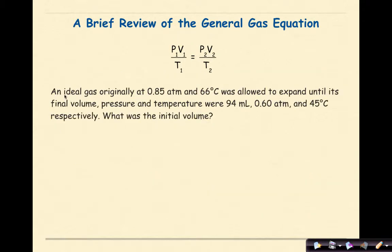Let's look at another example. An ideal gas originally at 0.85 atmospheres and 66 degrees Celsius was allowed to expand until its final volume, pressure, and temperature were 94 milliliters, 0.6 atmospheres, and 45 degrees Celsius, respectively. What was the initial volume?